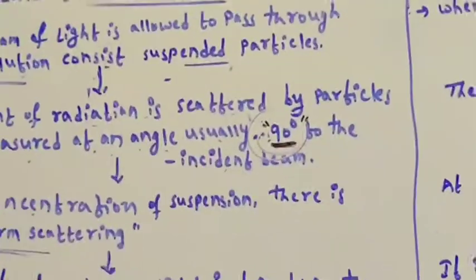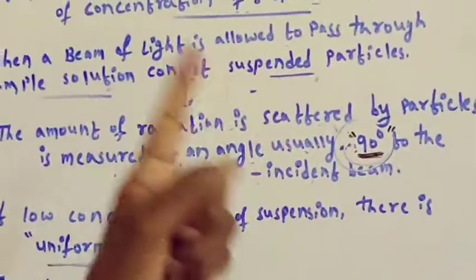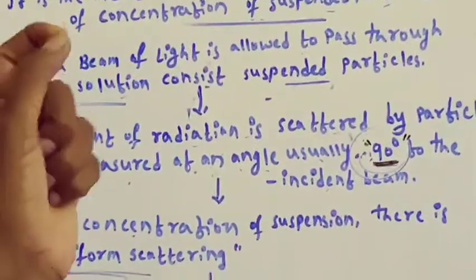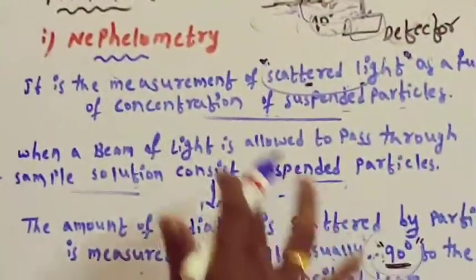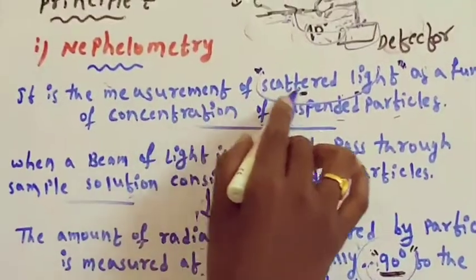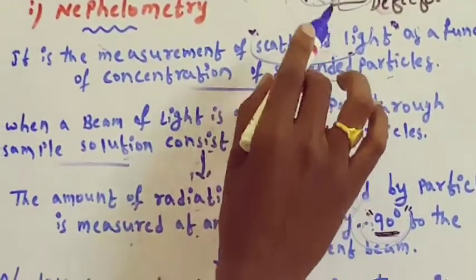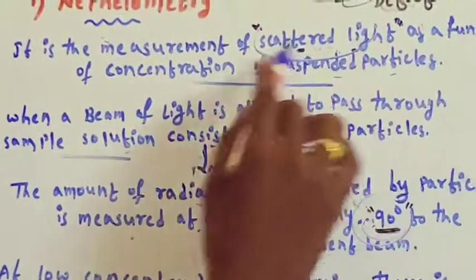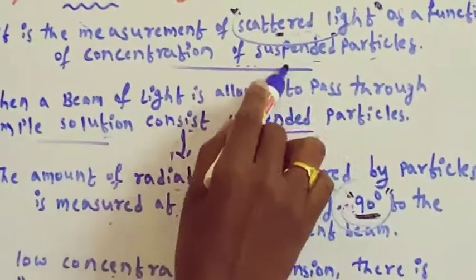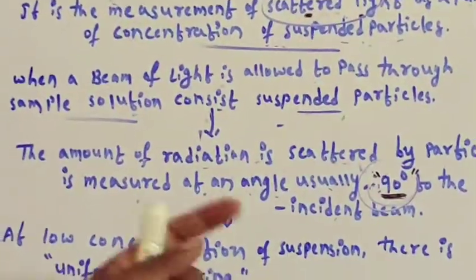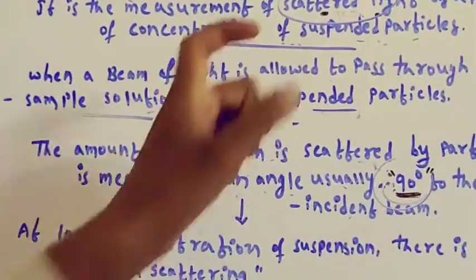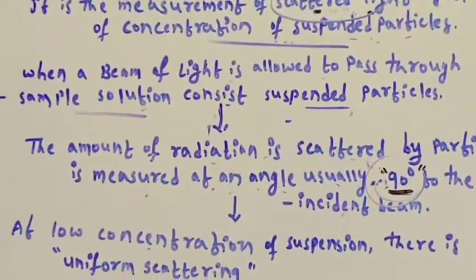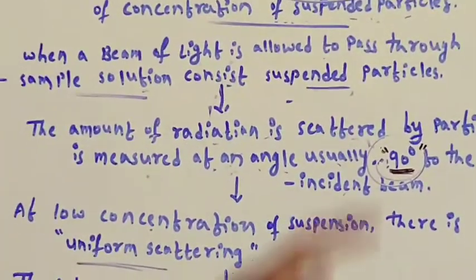Mainly at 90 degrees angle to the incident beam. This is the principle of nephelometry — the measurement of scattered light as a function of concentration of the suspended particles.